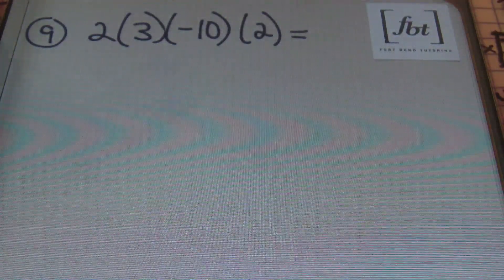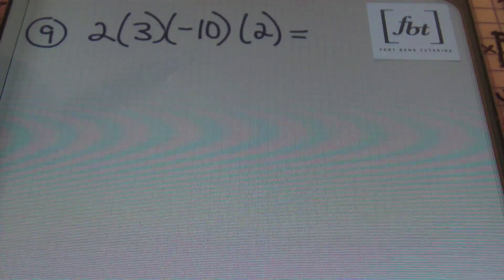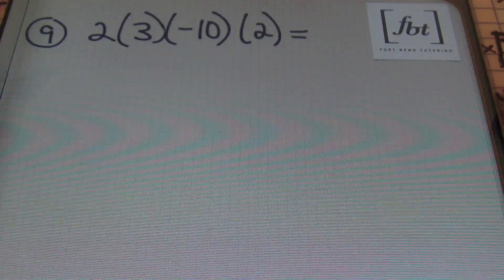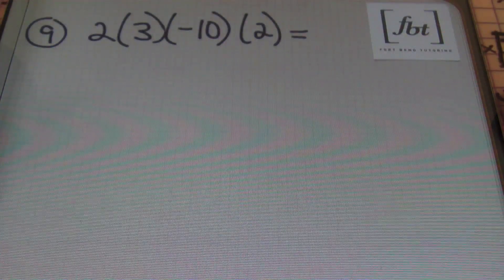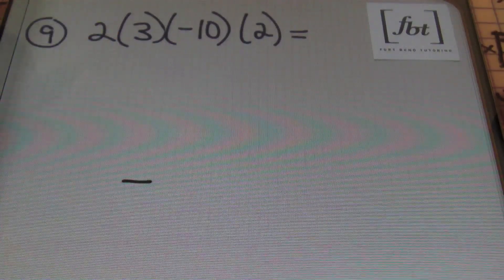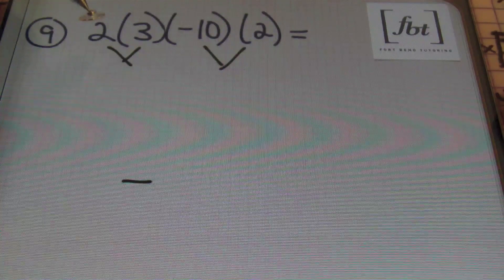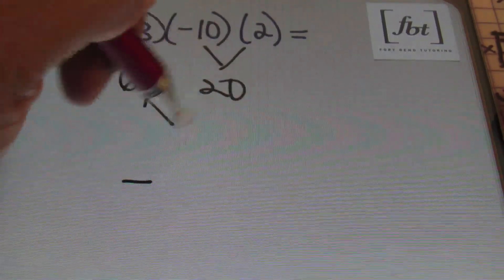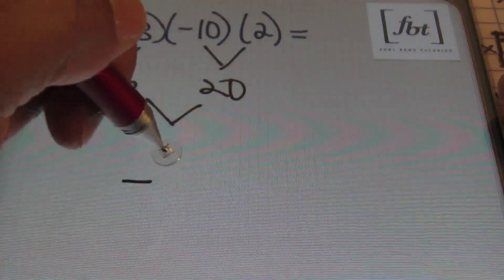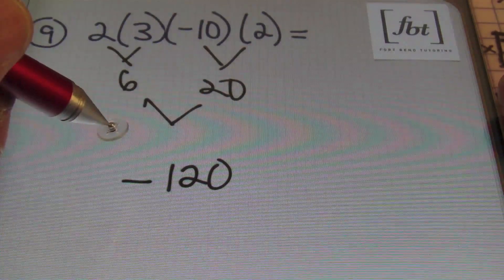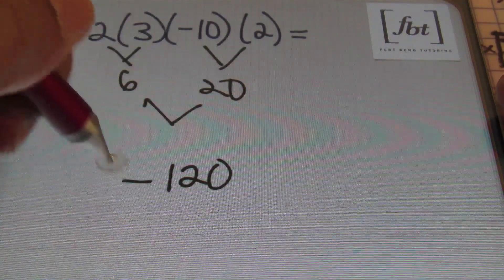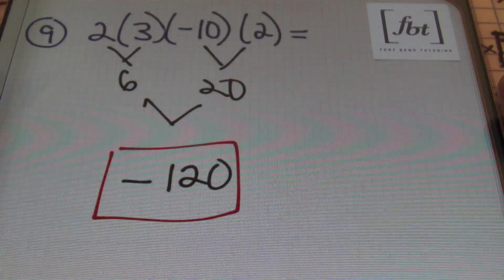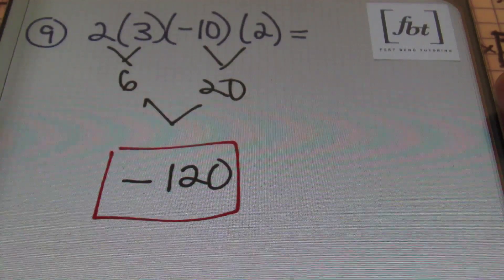In problem number nine, I have four terms; however, only one of them is negative. An odd number of negative signs will always generate a negative result, so my answer has to be negative. I'll multiply the first two numbers: two times three is six, then 10 times two is 20, and finally six times 20 gives me 120. With the negative sign already noted, the result is negative 120. We had a negative result because we had an odd number of negative signs.